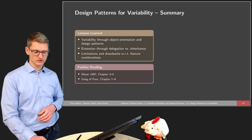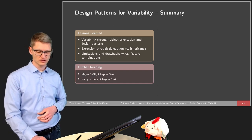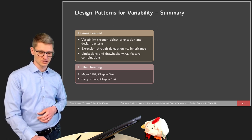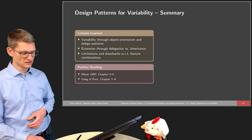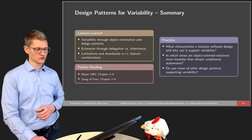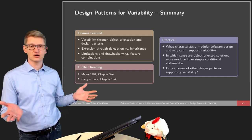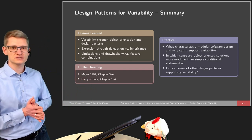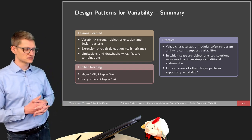For further reading, there is a book on object-oriented programming by Bertrand Meyer, and the Gang of Four book, which gives an overview of design patterns. You could now think about: what characterizes modular software design, and why can it support variability? How does modularity — in terms of classes, subclasses, and inheritance — support variability?